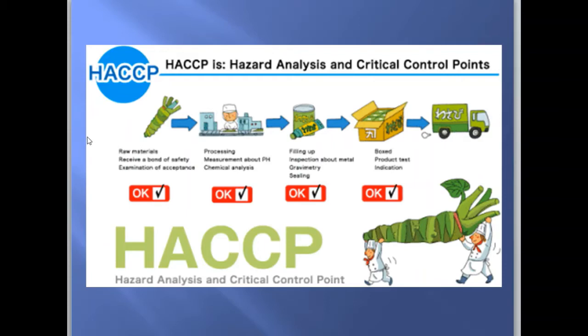Right from the start of food synthesis till it reaches the market, all the steps involved are being controlled, analyzed, and maintained in a controlled environment to maintain food quality. Hazard Analysis Critical Control Points mainly involves the analysis of food from processing till every point until it reaches the market.